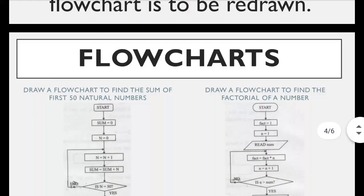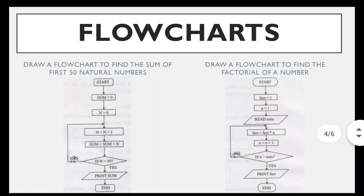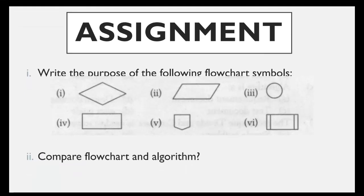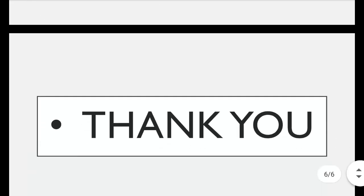If there is any problem, let me know. Otherwise, note down your assignment. First question: write the purpose of the following flowchart symbols — describe the purpose of the diamond shape, parallelogram, rectangular, and connector symbols. Second question: compare flowchart and algorithm — you can write three to five differences. If there is any problem, please let me know. Thank you so much, Allah Hafiz.